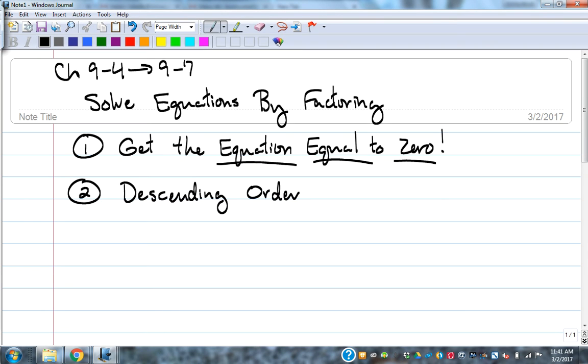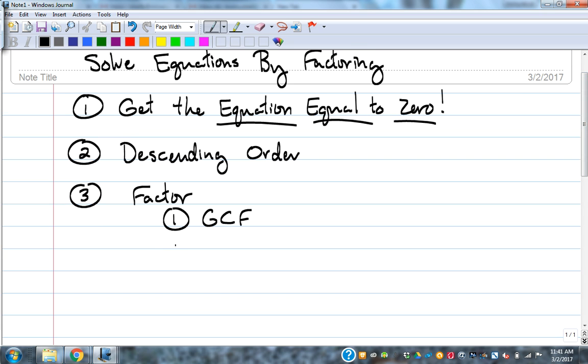Alright, so we get the equation equal to zero, we make sure it's in descending order, and then we factor it. What's the very first thing you look for when you're factoring? GCF. What do you do after you've done the GCF? Number of terms, you count terms.